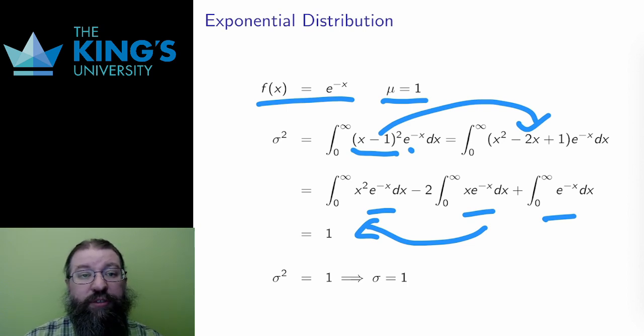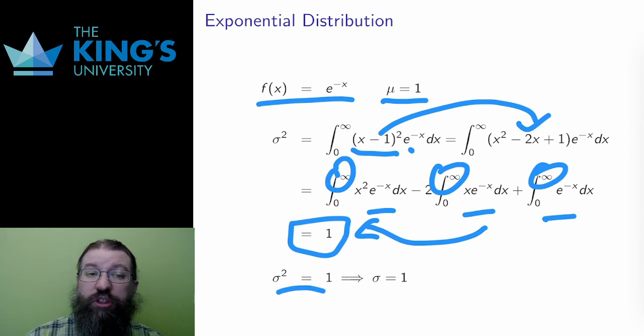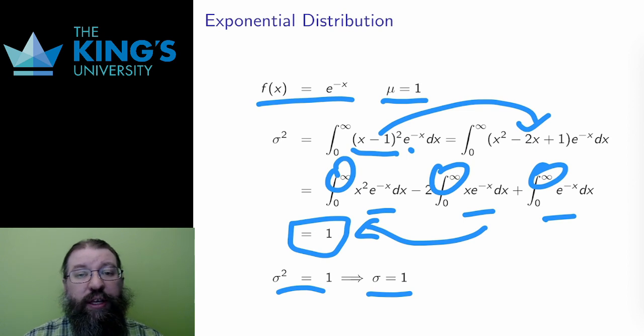I've not shown the integrals here. The first two of these are integration by parts integrals, and the last is a direct antiderivative. All of them need limits to deal with the infinite bounds on the integral, since they are improper integrals. In any case, the sum of the three results works out to exactly 1, which means that sigma squared is 1, which means that sigma, the standard deviation itself, is also 1.